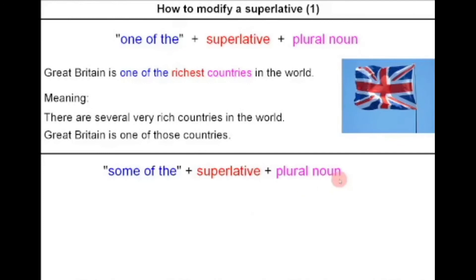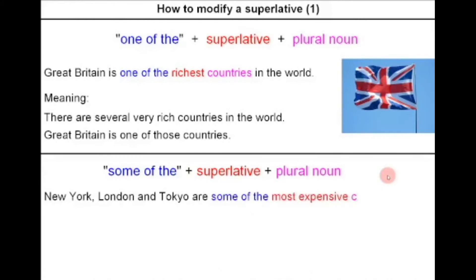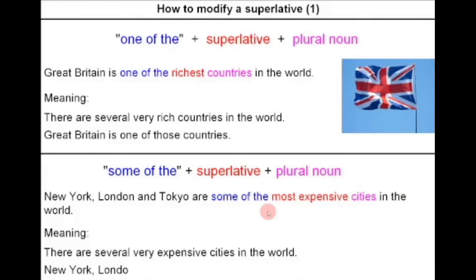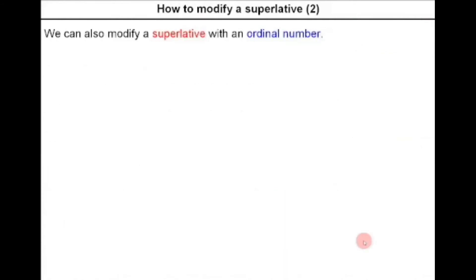How to modify a superlative? First: 'one of the' plus superlative plus plural noun. For example, Great Britain is one of the richest countries in the world. This means there are several very rich countries in the world, and Great Britain is one of those countries. Next: 'some of the' followed by superlative and plural noun. Example: New York, London, and Tokyo are some of the most expensive cities in the world, meaning there are several very expensive cities and those three are among them.